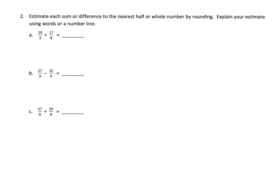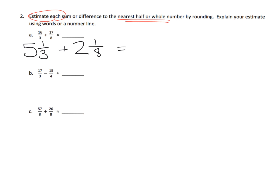This is more of the same — we're still going to be estimating, still rounding things to the nearest half or whole. The difference here is now they're giving us improper fractions. Parents and teachers, the purpose of this is to give your students continued practice of turning fractions that are greater than one into mixed numbers. Please don't rush through this — let your students make sure they really understand what's going on and how to convert fractions greater than one into mixed numbers.